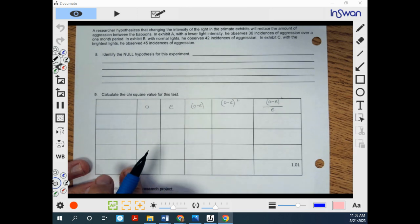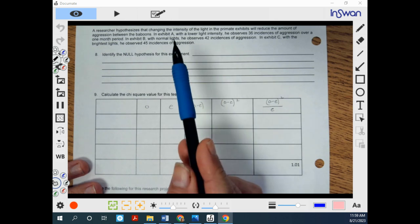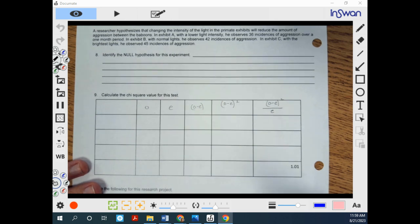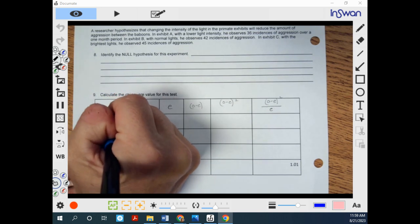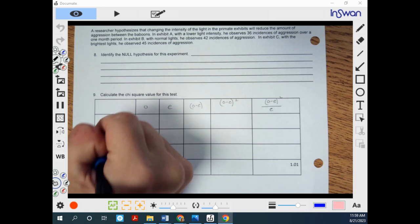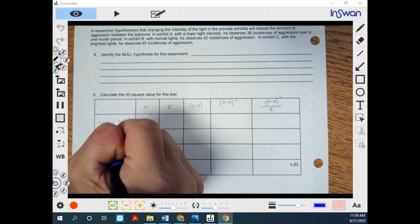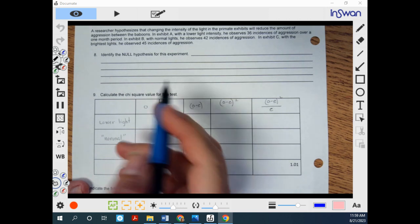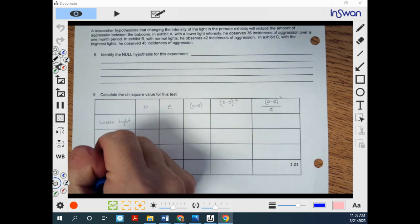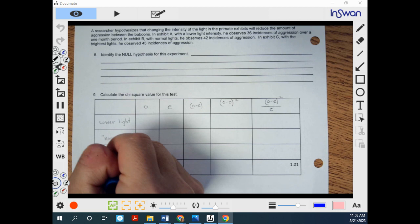Over here in the first column, we're going to put our different categories that we're analyzing. So we have A, B, and C, but that's really not what the IV is. So I'm going to indicate that we have a lower light intensity. We're going to have what's considered normal. And then we have the brightest lights.